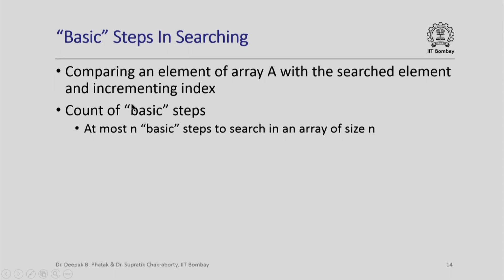How many basic steps are involved in this search? The basic step is comparing an element of the array a with the element being searched, and incrementing an index. It is easy to see that if the array a has size n, at most n basic steps may be needed. In the worst case, I might need to look at all elements before deciding whether the element is present. The question is: can we do better than n basic steps?